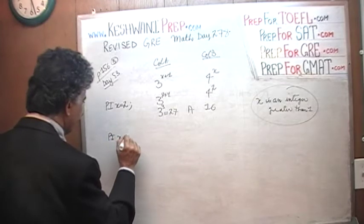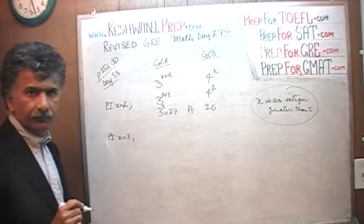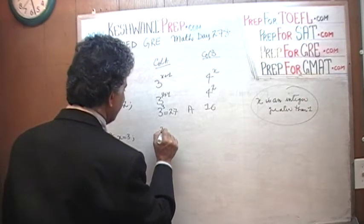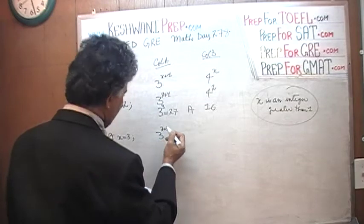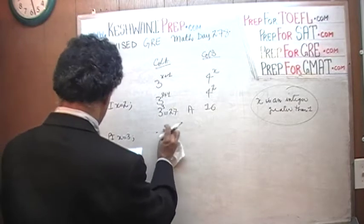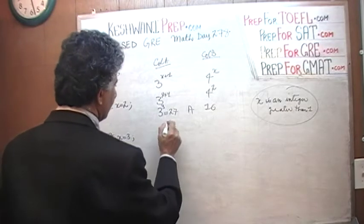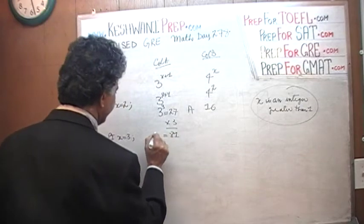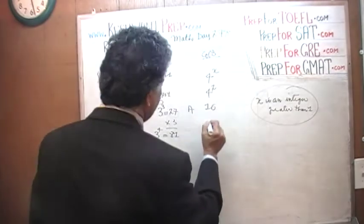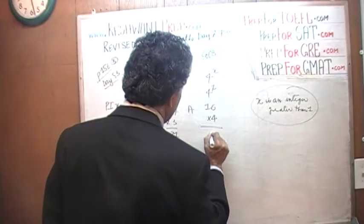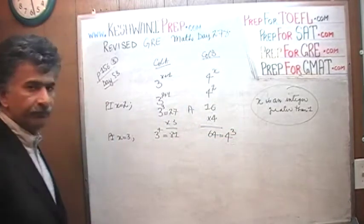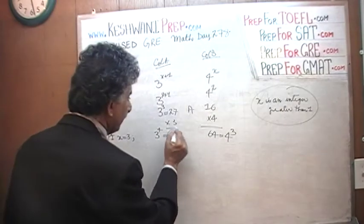Let's plug in x equal to 3. We get 3 raised to 3 plus 1, which is 3 raised to 4, which is 81 — that's 3 times the previous value of 27. And on the Column B side, when x is 3, we multiply by 4, which gives us 64, that's 4 raised to 3. Again, the answer is A, because we have 81 versus 64.